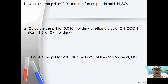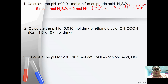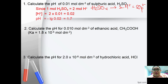First question: calculate the pH of 0.01 mol of sulfuric acid. H₂SO₄ dissociates to give 2H⁺ plus SO₄²⁻. The ratio is 1 to 2, so the concentration of H⁺ is 2 times 0.01, which is 0.02. Taking the negative log, you get a pH of 1.7.